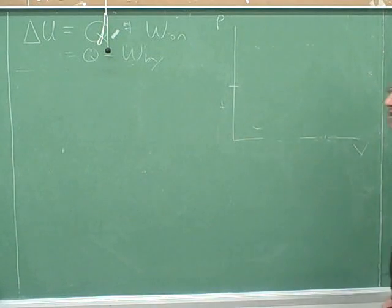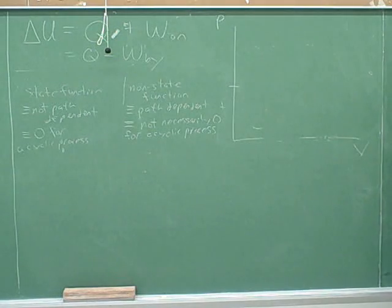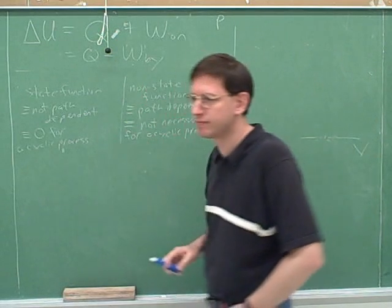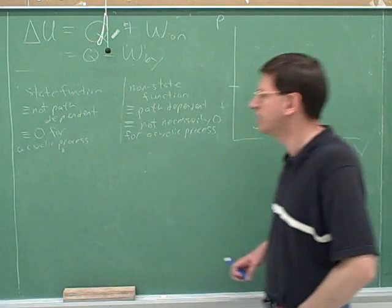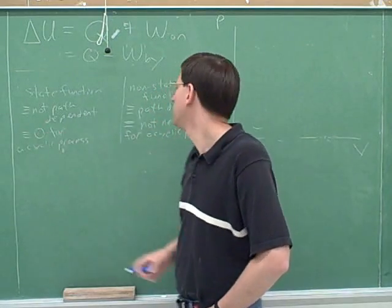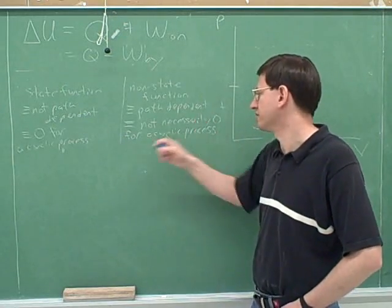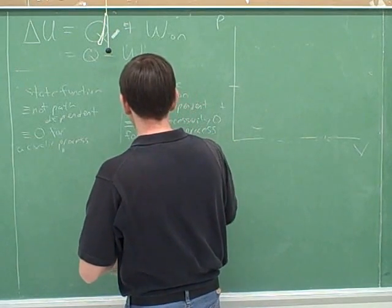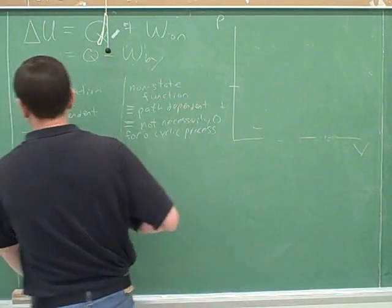Now we have to talk about state functions and non-state functions. A state function is something that is not path dependent, which also means that for a cyclic process it's going to be zero. Whereas a non-state function is something that is path dependent, which means it is not necessarily zero for a cyclic process.